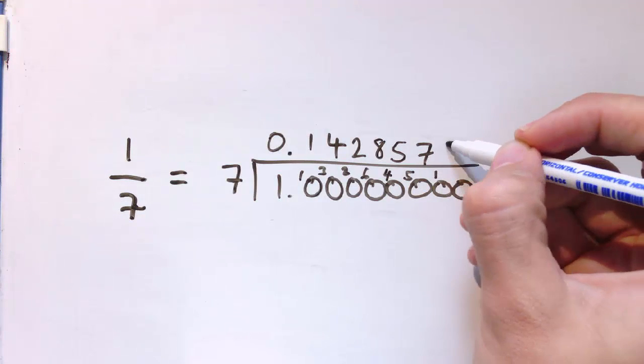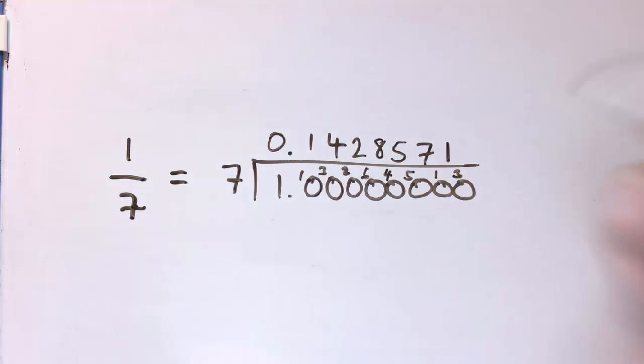7 into 10, go once with 3 left over. And at this point, we notice, as soon as we've got the same number appearing here again, that I've got the pattern starting to repeat again. So if it was 10 before, and I've got 3 left over. 10 before, 3 left over. So this is just going to have exactly the same thing happening again from here onwards.